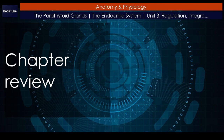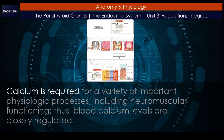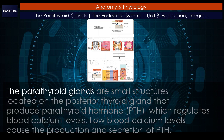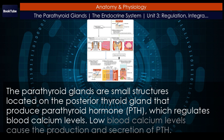Calcium is required for a variety of important physiologic processes, including neuromuscular functioning. Thus, blood calcium levels are closely regulated. The parathyroid glands are small structures located on the posterior thyroid gland that produce parathyroid hormone, PTH, which regulates blood calcium levels.